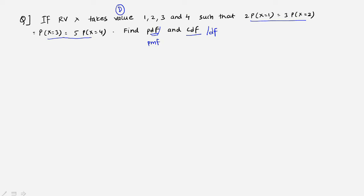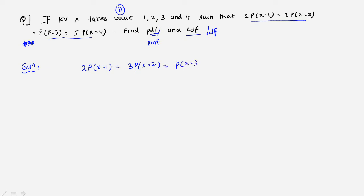This equation-based format is unique and interesting. Up till now you may have had equations where putting in the x value gives you the probability directly, but here you have a ratio equation. The approach is to find the LCM of the coefficients 2, 3, 1, and 5. The LCM of 2, 3, 1, and 5 is 30.